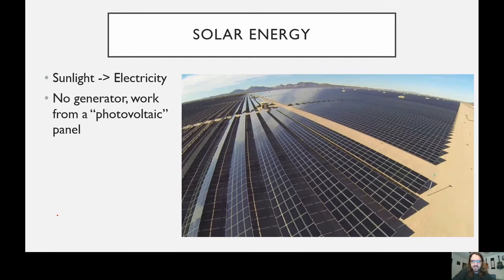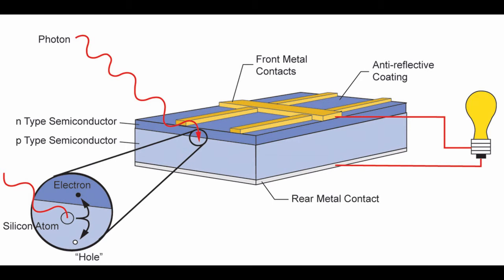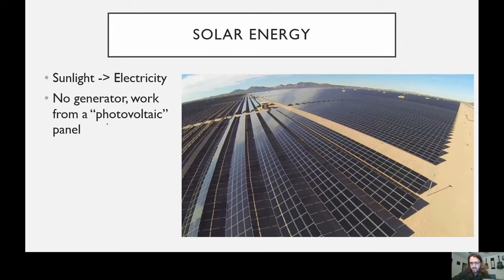Our next type of renewable energy is solar. Solar panels — sunlight hits them and generates electricity. There's no generator, nothing spinning. It's what is known as the photovoltaic effect: certain materials, when sunlight hits them, interact with electrons. Since electric current is just electrons moving through a wire, when sunlight hits this special panel it reacts with the electrons, gets them moving in one direction — that's current — and that is essentially how solar panels work.